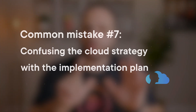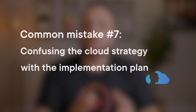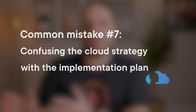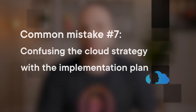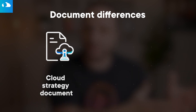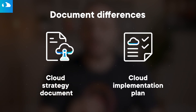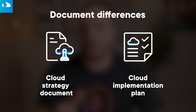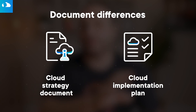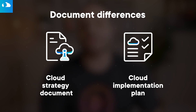Common mistake number seven: confusing the cloud strategy document and the cloud implementation plan. The cloud strategy document is a business document. The cloud implementation plan is an IT document that focuses on things like frameworks, best practices, schedules, and the steps that things need to be moved in.